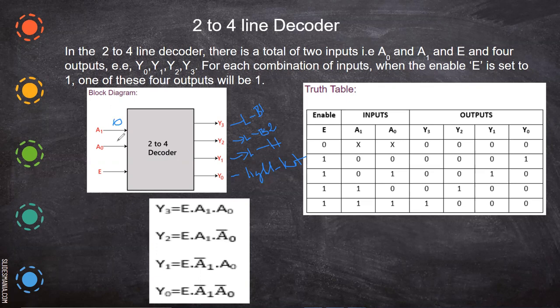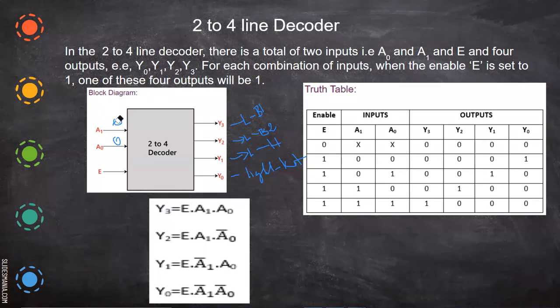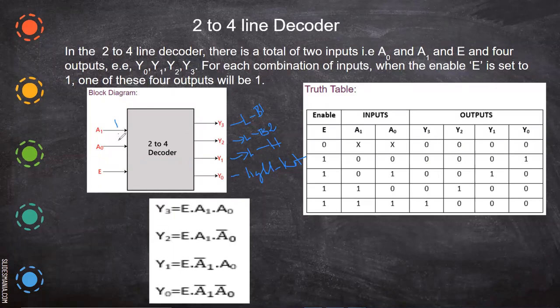Then I have to give the input as 0, 0. So when I give 0, 0, the output only this will be enabled. This will only work, which means if it is connected to the kitchen light, only kitchen light will on. The other lights will not on. Suppose I want to make this bedroom one, which means both I have to give one one. So Y3 is nothing but one one here. If I give one one, the bedroom one light only will on. All the others will be off.